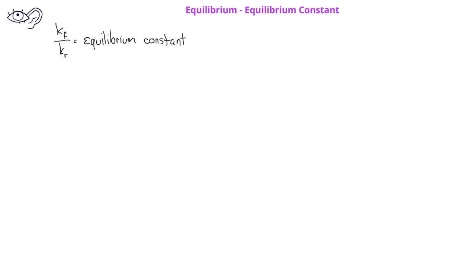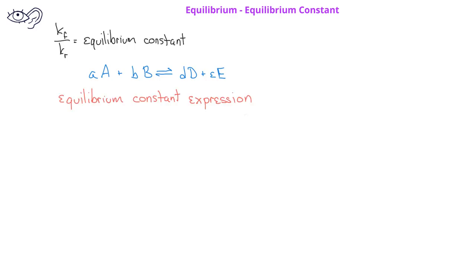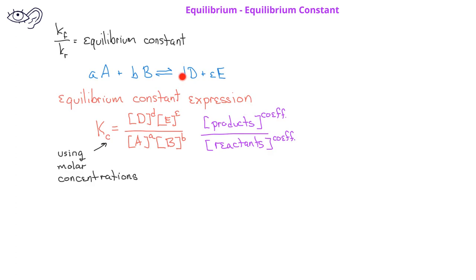In a previous slide, we saw that if we combine the rate constant for the forward reaction and the rate constant for the reverse reaction, we get a new constant that we call the equilibrium constant. For a general reaction where there are A moles of A reacting with B moles of B to produce D moles of D and E moles of E, we can write what we call an equilibrium constant expression. We represent the equilibrium constant with a capital letter K, and in this situation we'll use a subscript C to indicate we're working with molar concentrations of reactants and products. The equilibrium constant expression indicates that Kc equals the molar concentrations of the products raised to their coefficients, divided by the molar concentrations of the reactants raised to their coefficients.